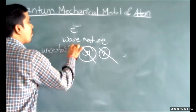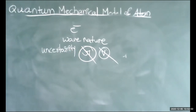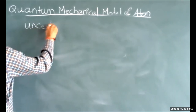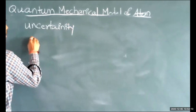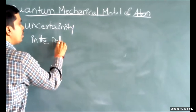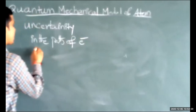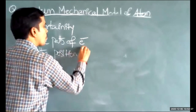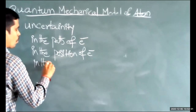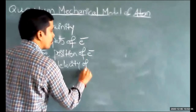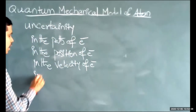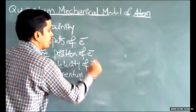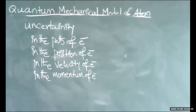Finally, we can say that electrons revolving around the nucleus have uncertainty in the path of the electron, uncertainty in the position of the electron, uncertainty in the velocity of the electron, and uncertainty in the momentum of the electron.